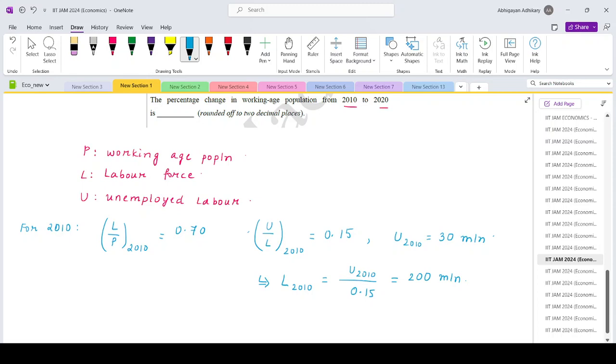And from the information on L by P, what is the population in 2010? It is the total labor in 2010 divided by 0.7. So labor is 200 divided by 0.70, and this will be roughly coming out to be around 285.7 million.